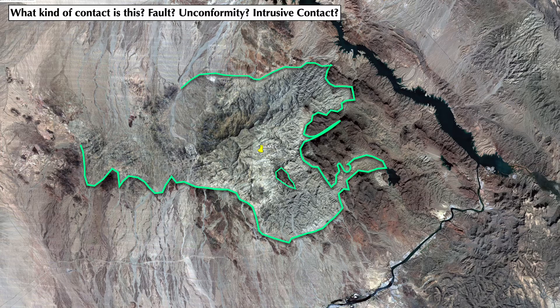Finally, I wanted you to think about what kind of contact this is. Distinguishing the kind of contact from Google Earth imagery is really very difficult — you'd want to have your boots on the ground. But I wanted you to consider what you would look for if you had a chance to visit this place, to distinguish whether this contact was a fault, an unconformity, or perhaps an intrusive relationship. Here are some of the basics I would look for.